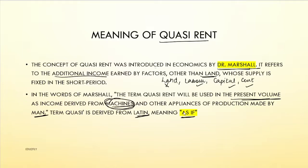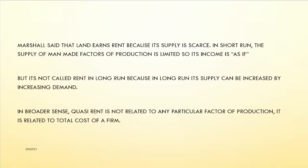Marshall said that land earns rent because its supply is scarce in both the short run and long run. If we talk about man-made factors like machines, their supply is limited in the short run, so their income is limited — as if it were rent. But it is not exactly rent. Quasi Rent arises only in the short run, not in the long run.